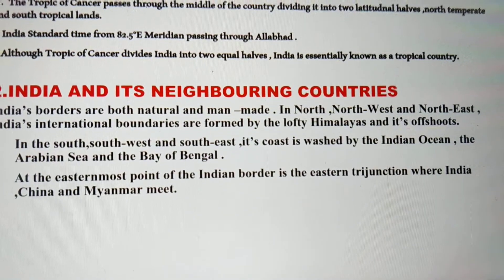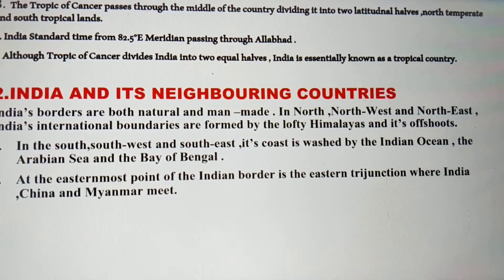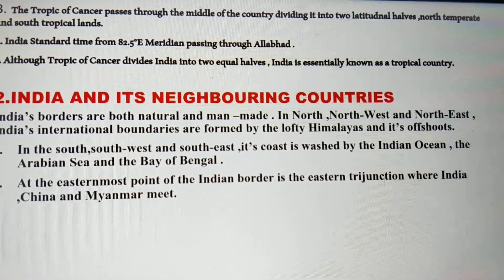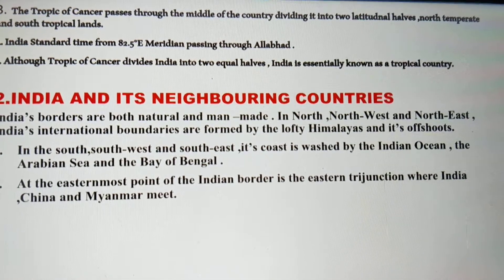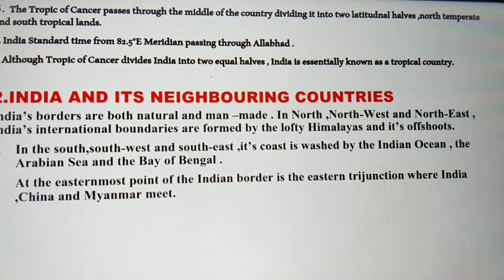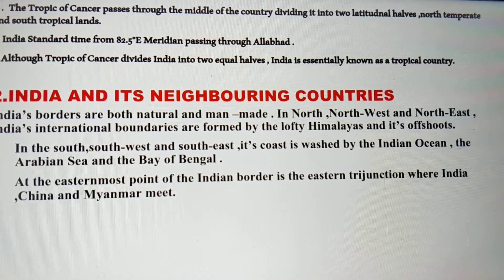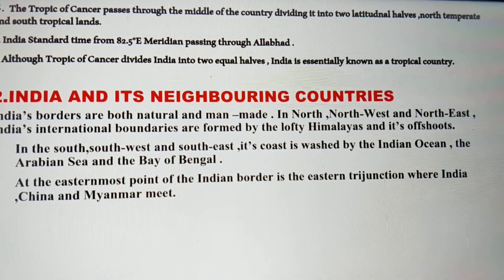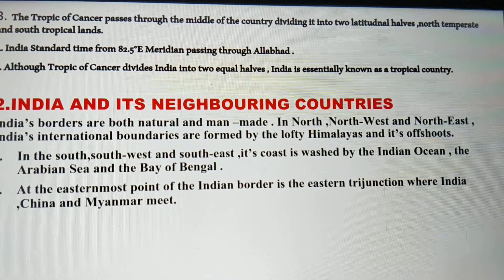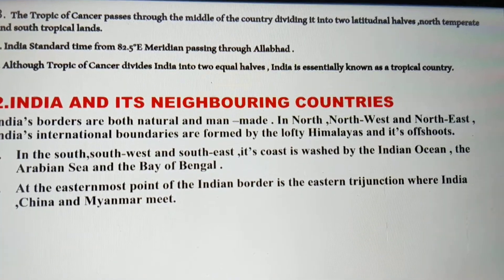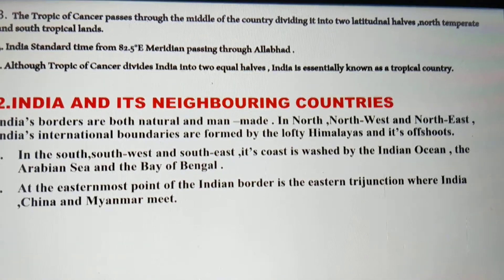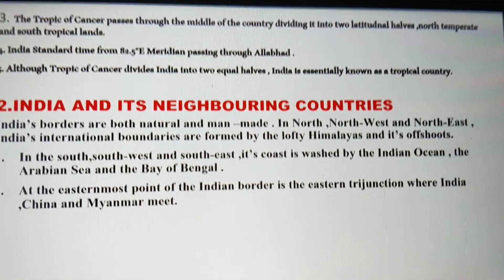In the south we have the Indian Ocean, on the southwest we have the Arabian Sea, and on the southeast we have the Bay of Bengal. At the easternmost point of India's border is the eastern trijunction, where India, China and Myanmar meet — meaning three countries share their boundaries at that point.